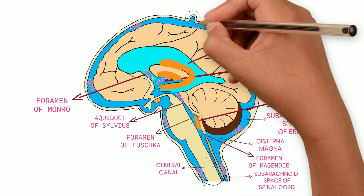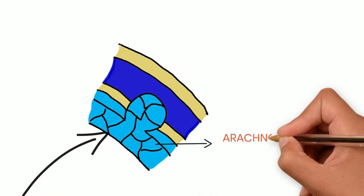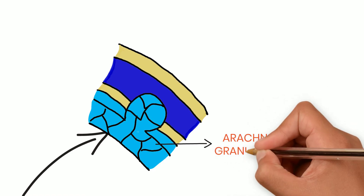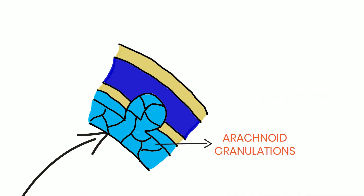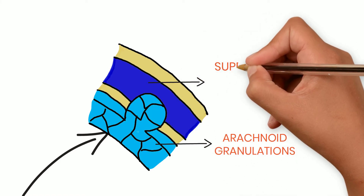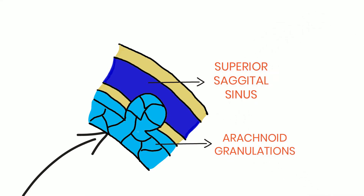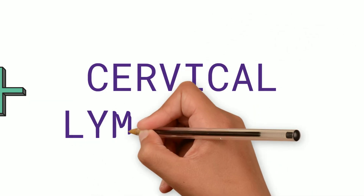Arachnoid granulations are protrusions of the arachnoid membrane which pierce the dura mater and protrude into the venous sinuses; they contain multiple smaller outgrowths called arachnoid villi. CSF flows through the arachnoid granulations into the venous sinuses, thereby getting absorbed into venous blood. A small amount is also absorbed into cervical lymphatics via the cribriform plate.